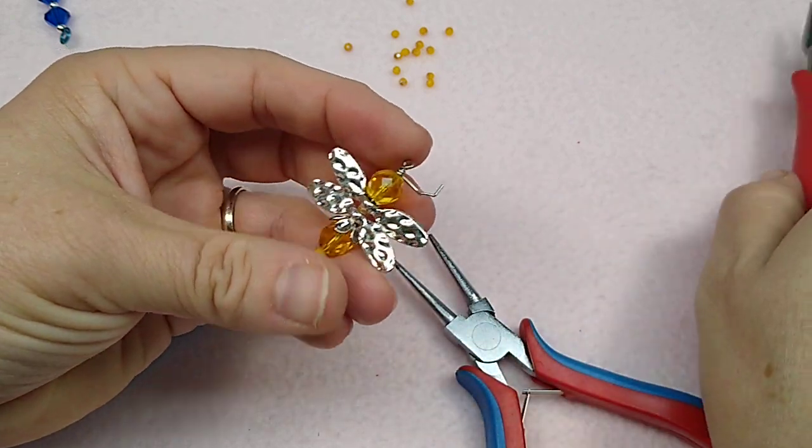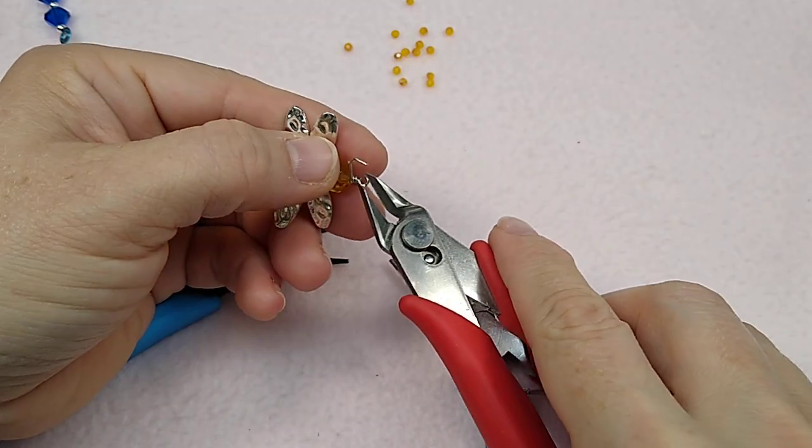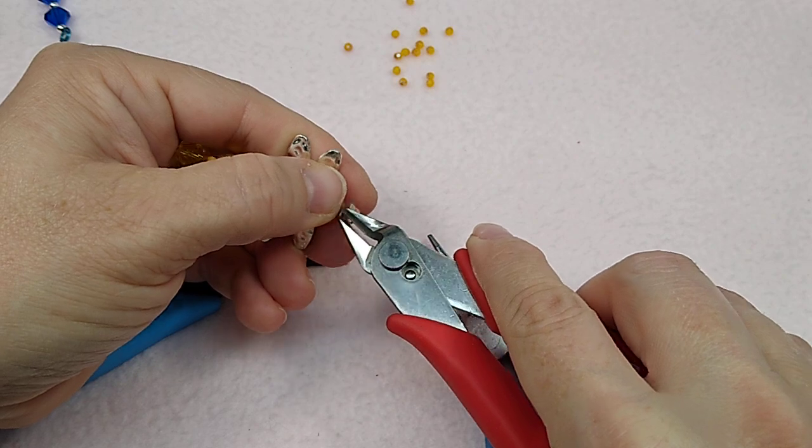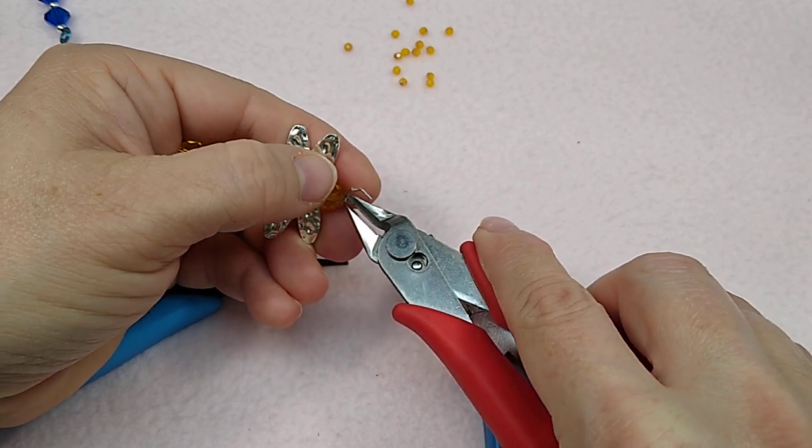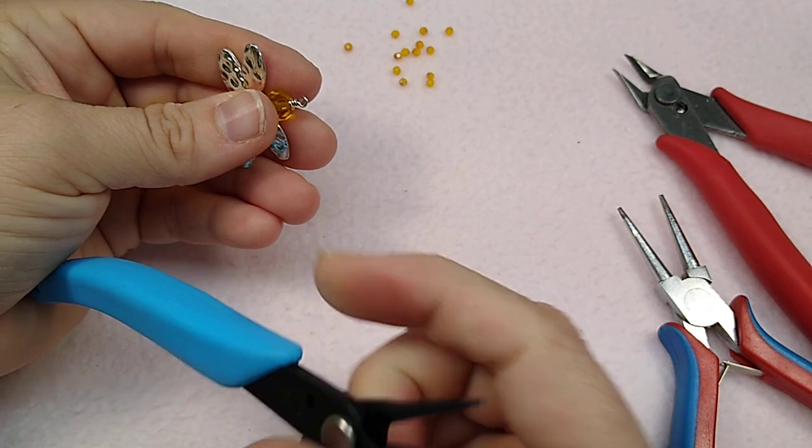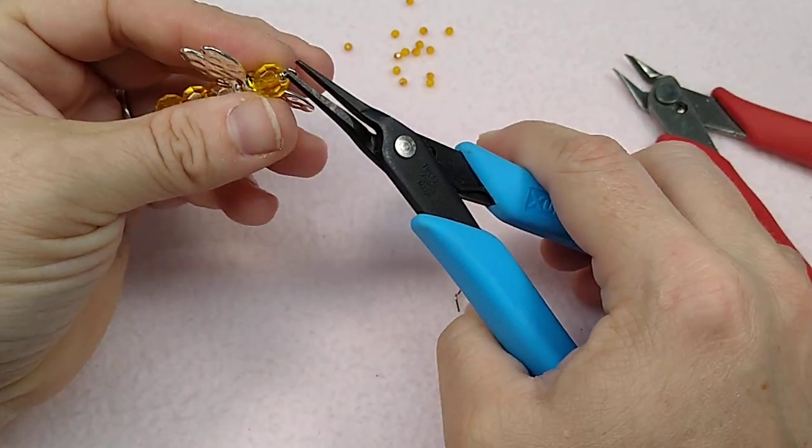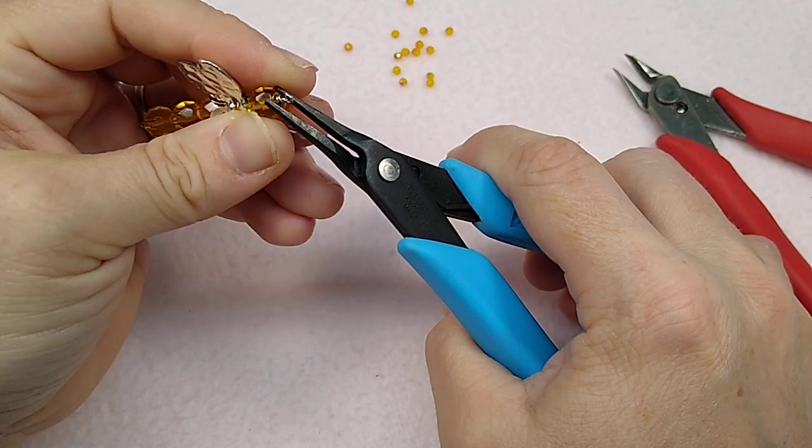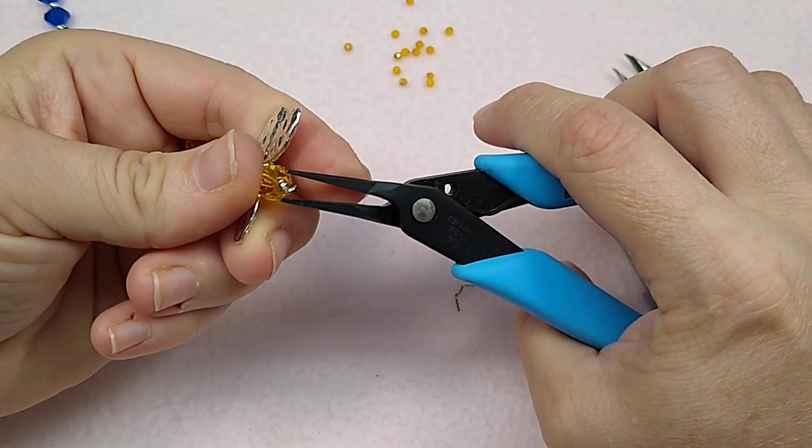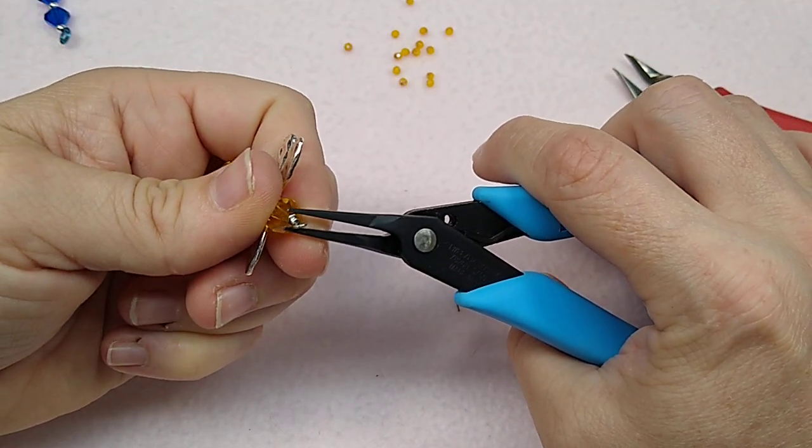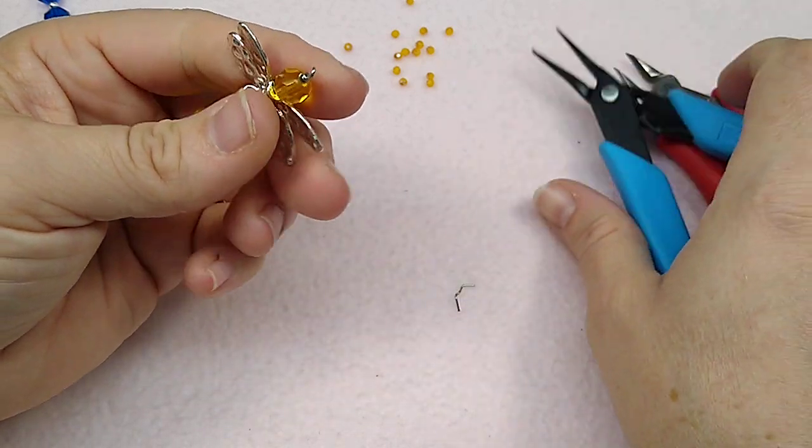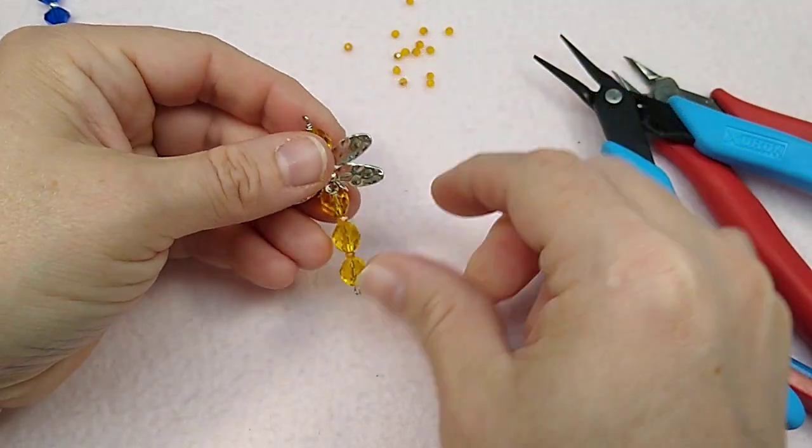Okay. Trim this off. Okay. And I'm going to just tuck this. I try to tuck this wire. You have to do it kind of carefully because you don't want to break your bead. I also don't want it poking anybody or snagging on their clothes. Okay. Just like that. And there's this guy now.